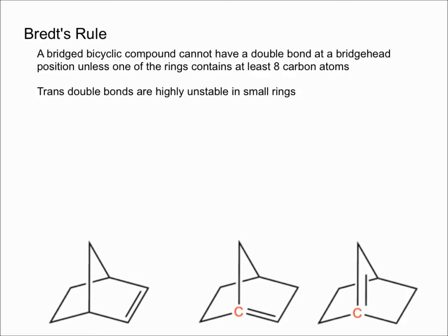This might seem a little confusing right now, but essentially what this is saying is that trans double bonds are unstable in small rings and therefore are very unlikely to form.